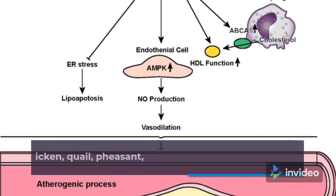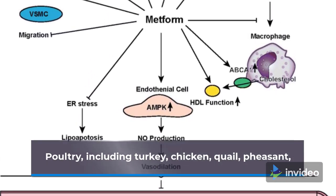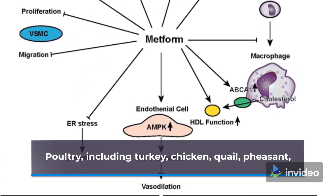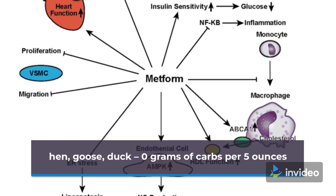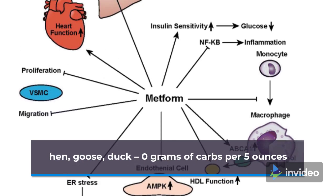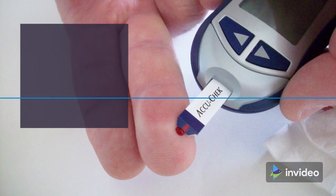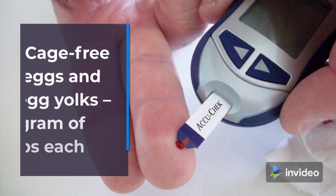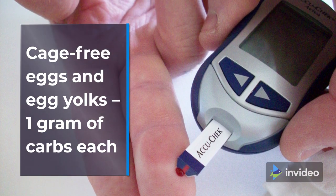Poultry, including turkey, chicken, quail, pheasant, hen, goose, and duck — 0 grams of carbs per 5 ounces. Cage-free eggs and egg yolks — 1 gram of carbs each.